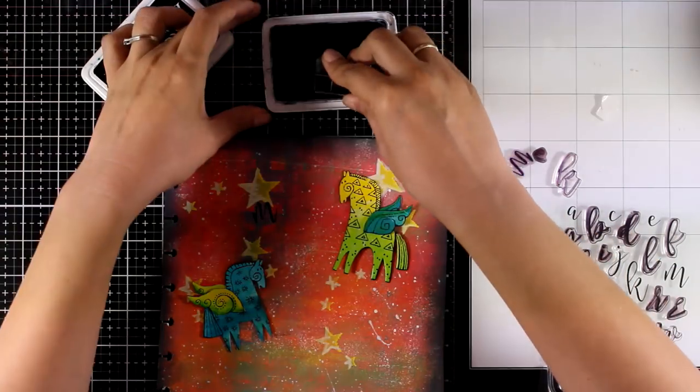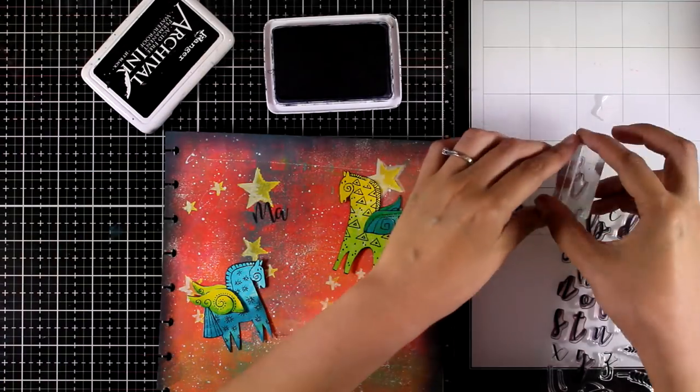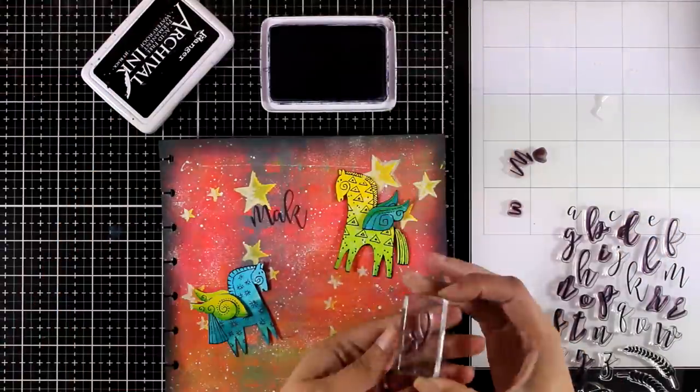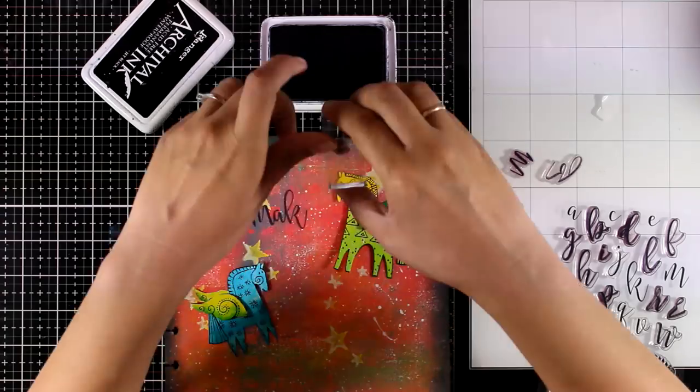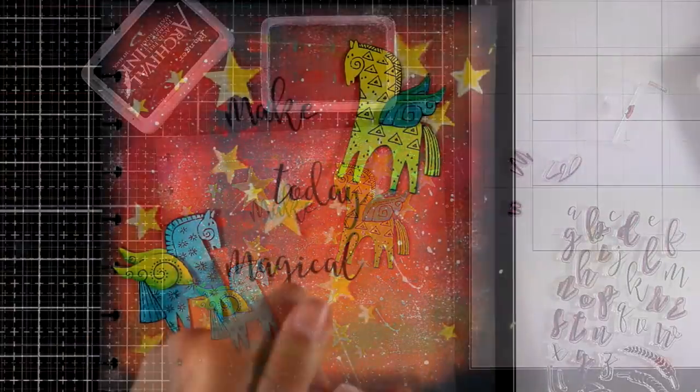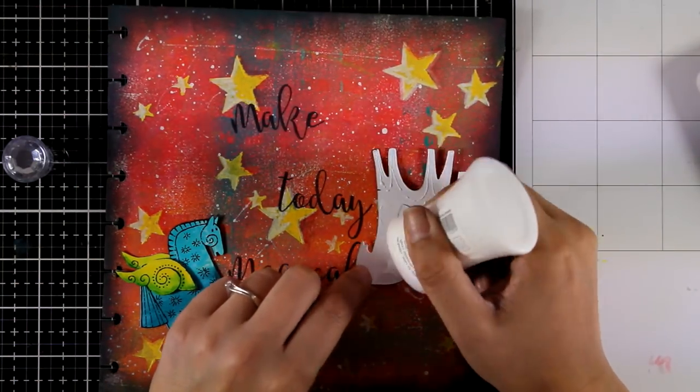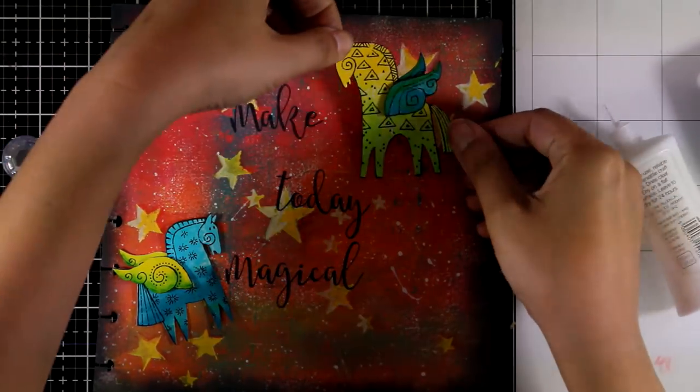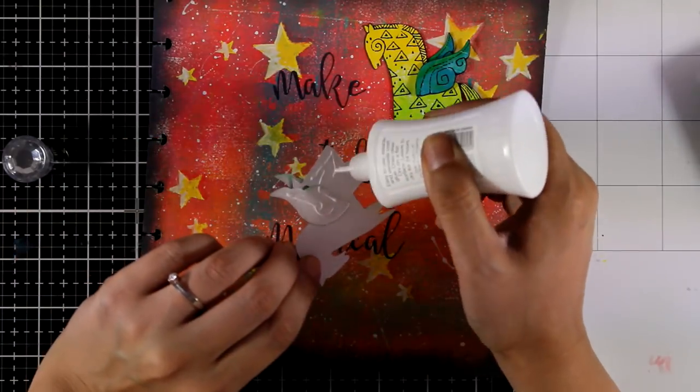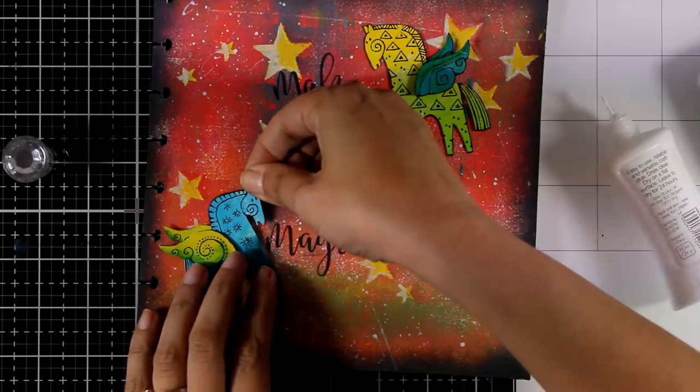Those horses are not stuck down there yet so I decided first to stamp the sentiment to make sure that I have enough space for it and then I'm going to stick the horses down. For my sentiment I'm going with 'Make Today Magical' and I'm going to stamp it using a Concord & 9th lovely alphabet stamp set. I'm just stamping letter by letter and this is a lovely alphabet that I have been using for a long time, it's called Sophisticated Script stamp set. I like it because when you stamp the letters next to each other they look as if you have beautiful handwriting. I'm using my white glue, this is Nuvo Deluxe, to stick my horses down.